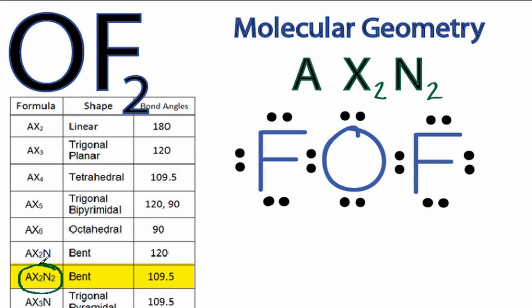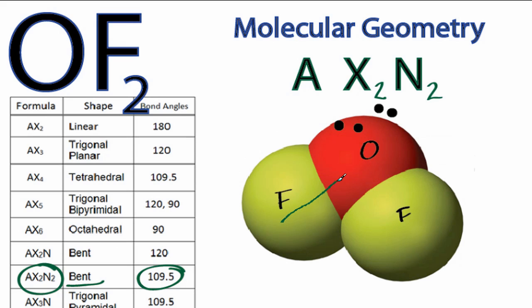and there's AX2N2, which is a bent molecular geometry. The bond angles are about 109.5 degrees, and we can look back to our three-dimensional structure and see that this angle right here is about 109.5. Probably not exactly that, but pretty close.